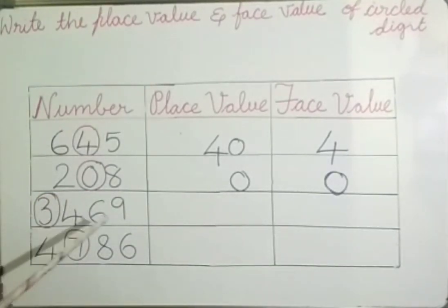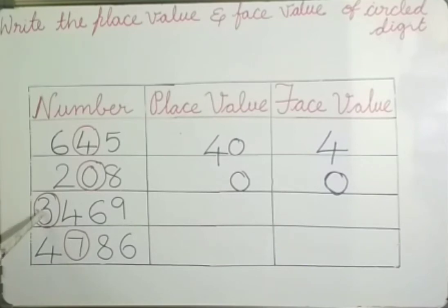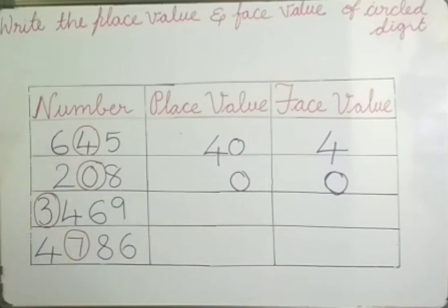In the number 3,469, the circled digit is 3. 3 is at the 1000's place — 3 × 1000 = 3000. We read 3 as 3000. So 3000 is the place value of 3.